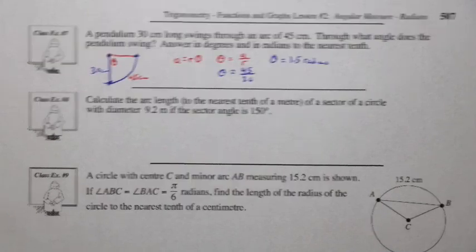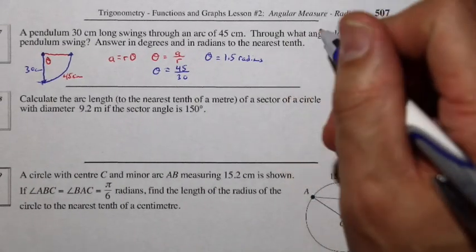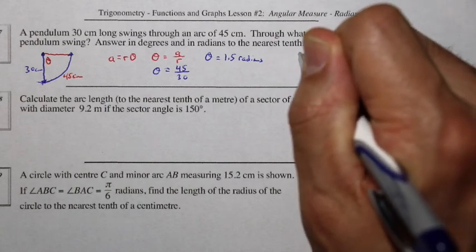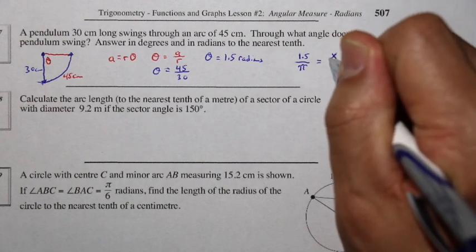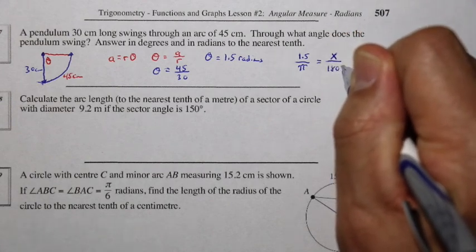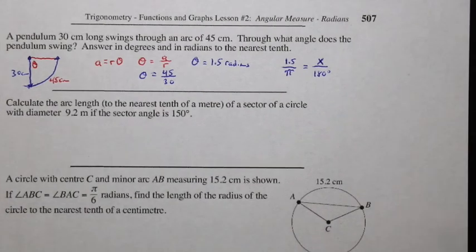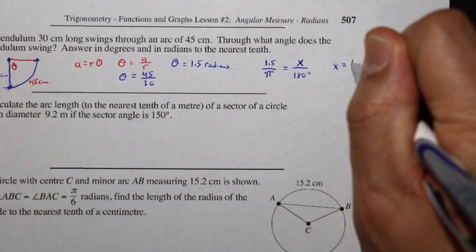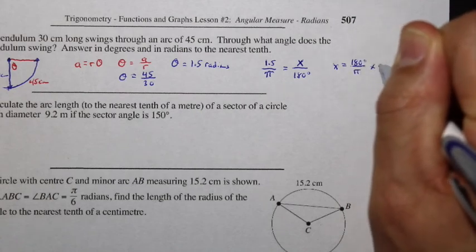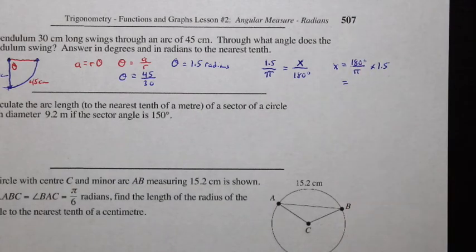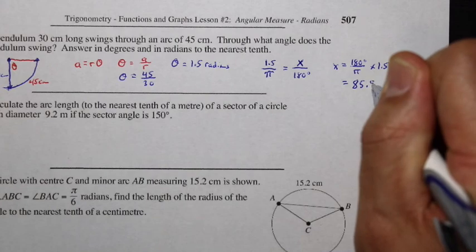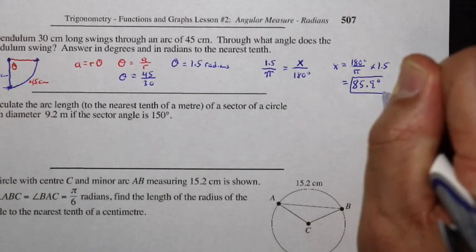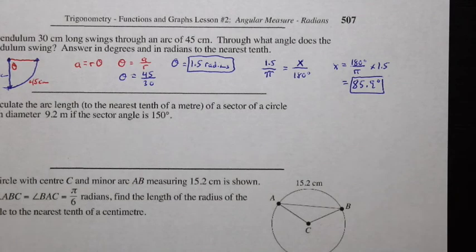Now let's convert that measurement to degrees. We have 1.5 radians compared to pi radians, proportional to x degrees compared to 180 degrees. Solving for x: x equals 180 degrees over pi times 1.5, which gives us 85.9 degrees. So the pendulum swings through an angle of 1.5 radians or 85.9 degrees.